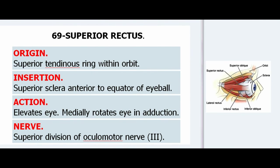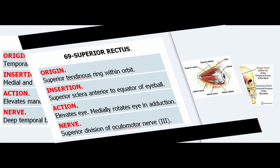69. Superior Rectus. Origin: Superior tendinous ring within orbit. Insertion: Superior sclera anterior to equator of eyeball. Action: Elevates eye, medially rotates eye in adduction. Nerve: Superior division of oculomotor nerve (III).